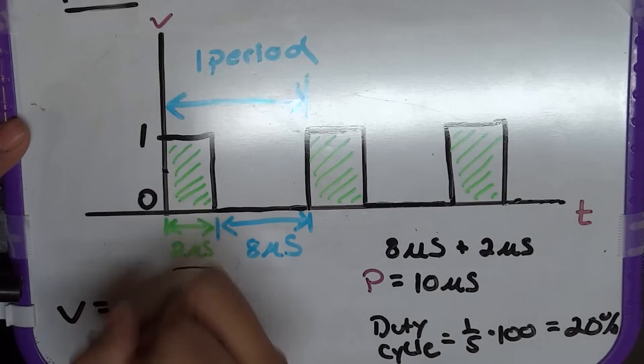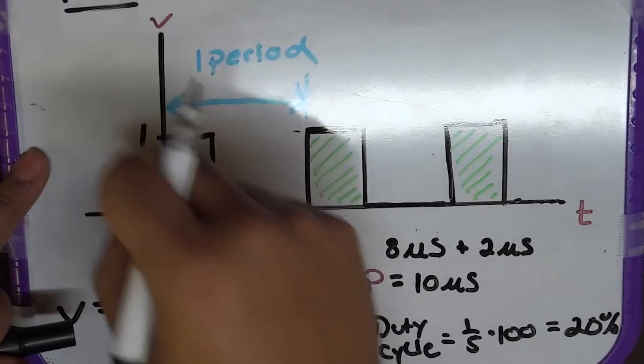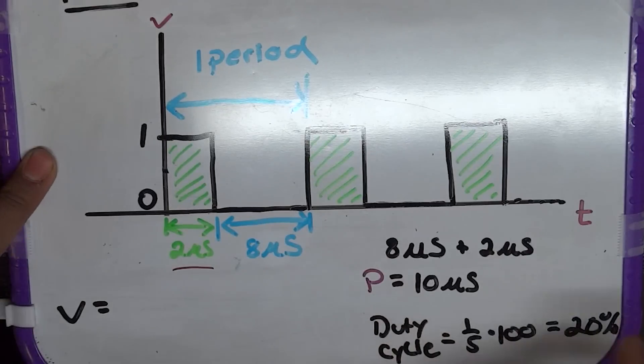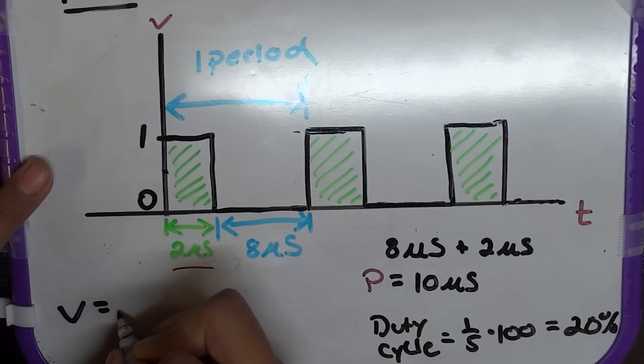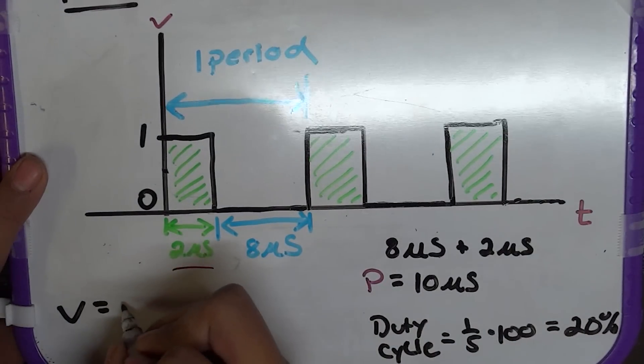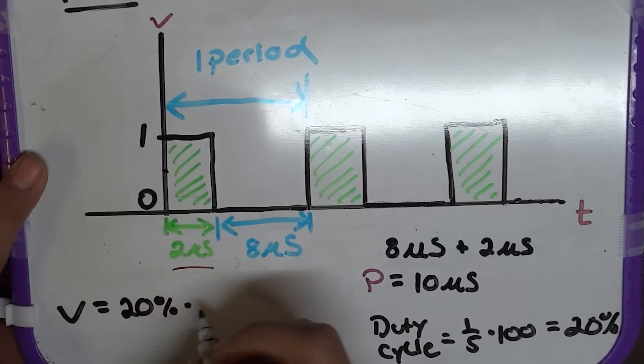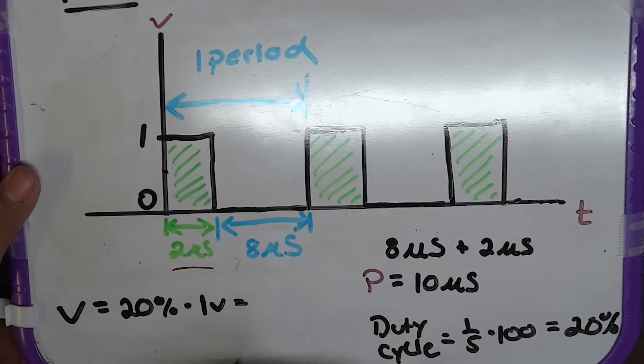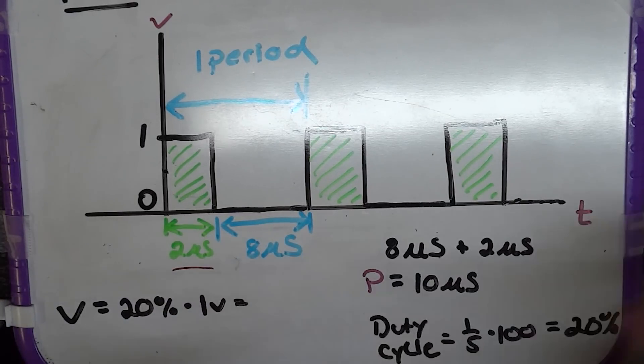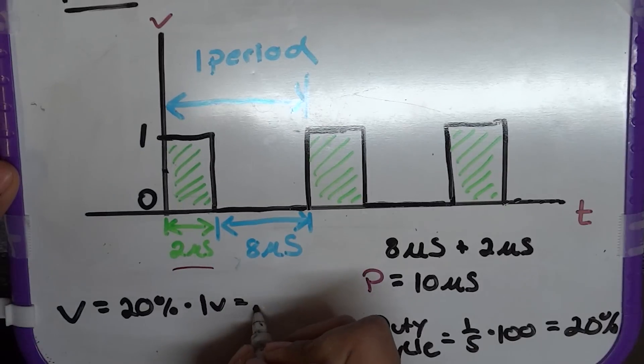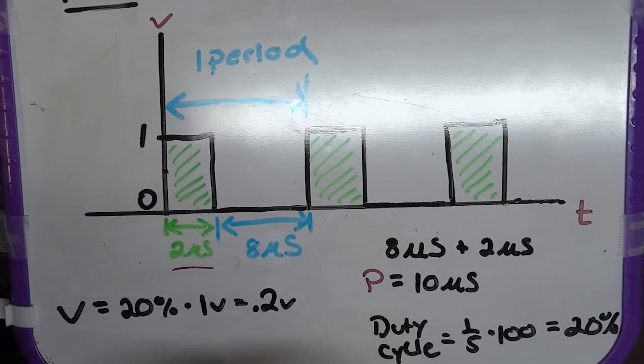So, the voltage of this PWM signal at a high enough frequency would be the percentage multiplied by the voltage, the peak voltage. So, 20% of 1 volt, quite obviously, 0.2 of a volt.